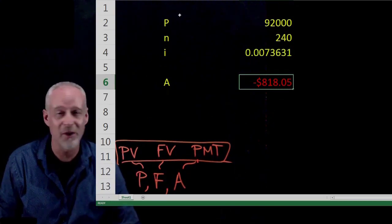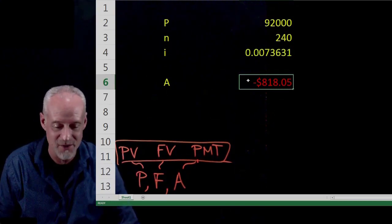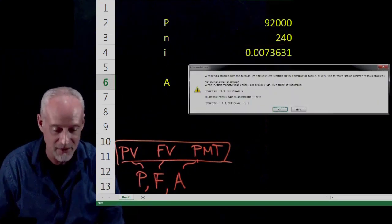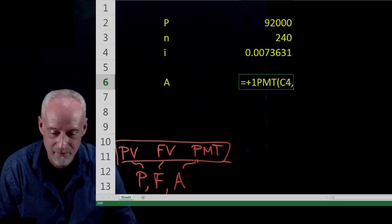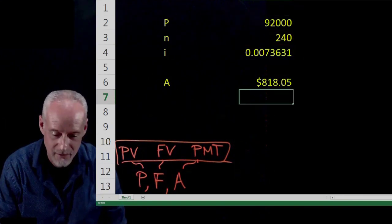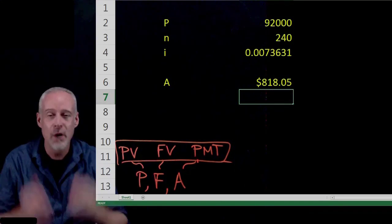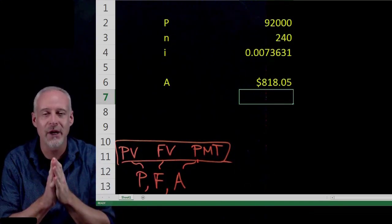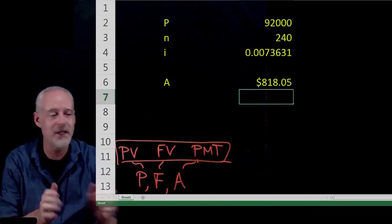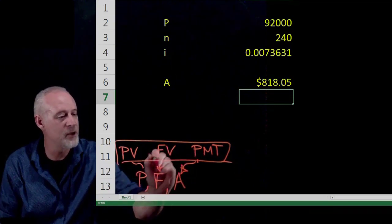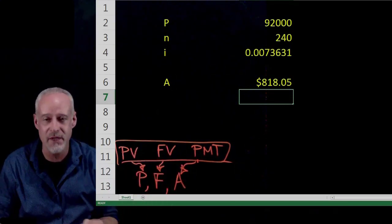818. I'll tell you what I'm going to do. I'm going to put a, I'm going to just go in here and insert a negative sign just so we get a positive number. There's our $818.05. Pre-programmed financial calculations. PMT is equal to the A. Future value is equal to F. Present value is equal to P.